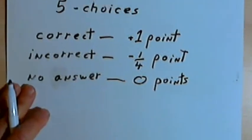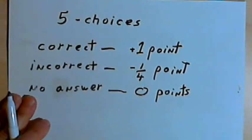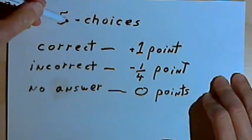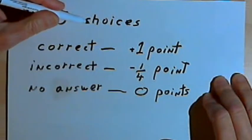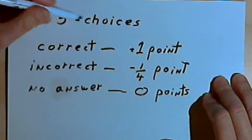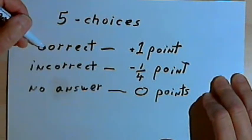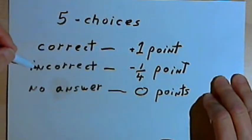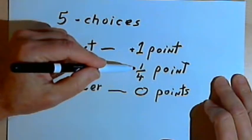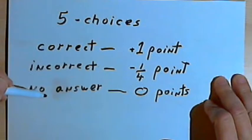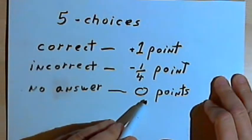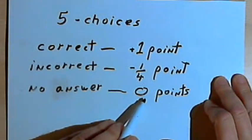Here's how the multiple choice questions work. For each question you're given five possible answers, five choices. If you get the correct answer, you gain a point. If you choose an incorrect answer, you lose a quarter of a point. If you don't answer at all, you don't gain or lose anything — it's just zero points.